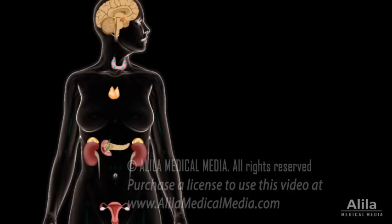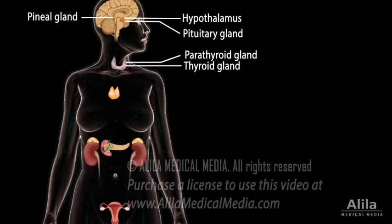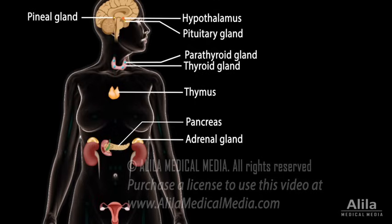Major endocrine glands include the hypothalamus, pituitary gland, pineal gland, thyroid and parathyroid glands, thymus, adrenal gland, islets of the pancreas, and testes in men or ovaries in women. The endocrine system also includes hormone-secreting cells from other organs, such as the kidneys and intestines.